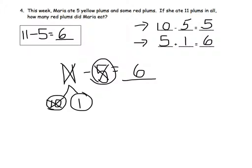So 11 minus 5 equals 6. Maria ate 6 red plums.